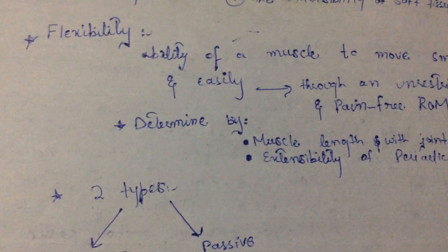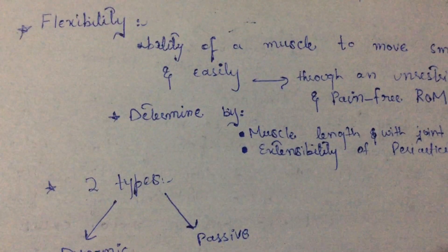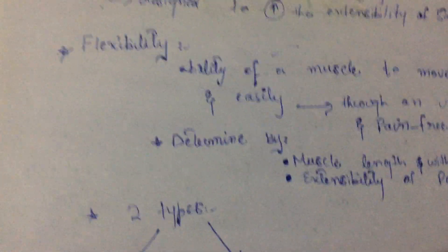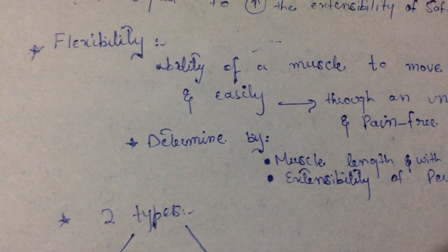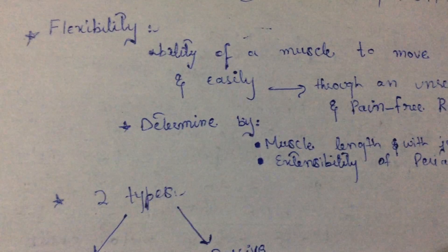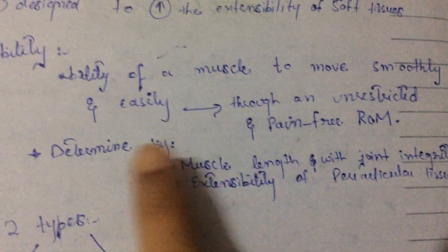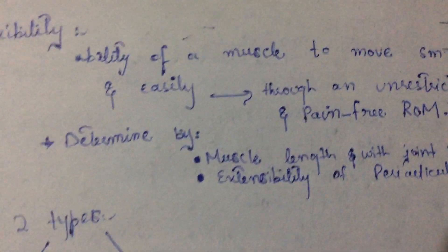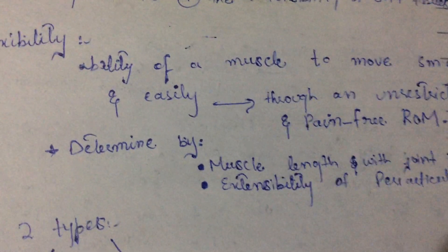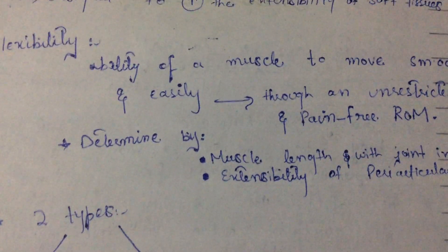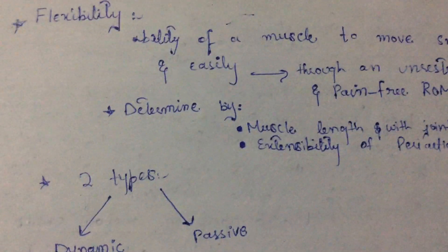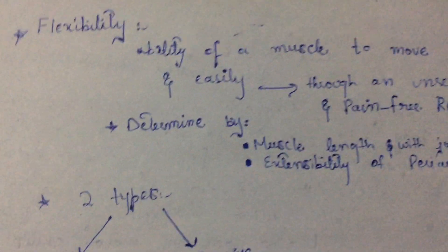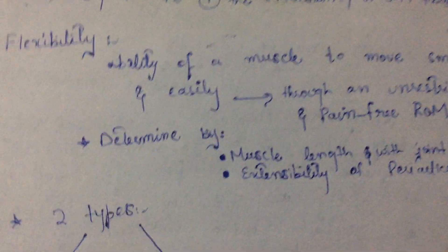In this lecture we are going to study flexibility. This chapter is called 'Stretching for Impaired Mobility.' Flexibility is basically the ability of a muscle to move smoothly and easily through an unrestricted and pain-free range of motion. If a muscle has the ability to move easily without any restriction or pain, we can say that is the flexibility of the muscle. Flexibility varies from person to person.